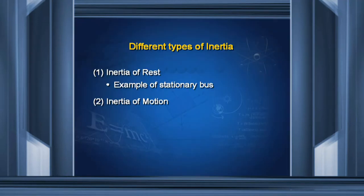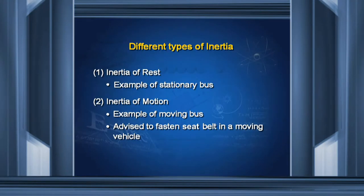The second type is inertia of motion. It states that if an object is in the state of motion, it tries to remain in motion. For example, if you are standing in a moving bus and the driver applies brakes suddenly, your lower body slows down but your upper body, which was in motion, continues to be in motion. As a result, you may fall in the forward direction. This is why you are advised to fasten your seat belt in a moving vehicle.